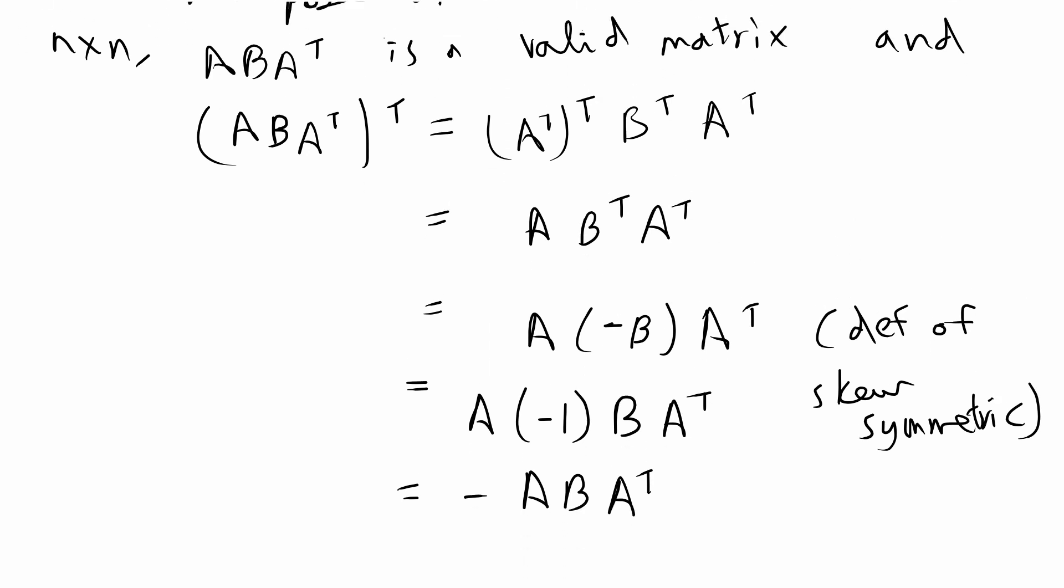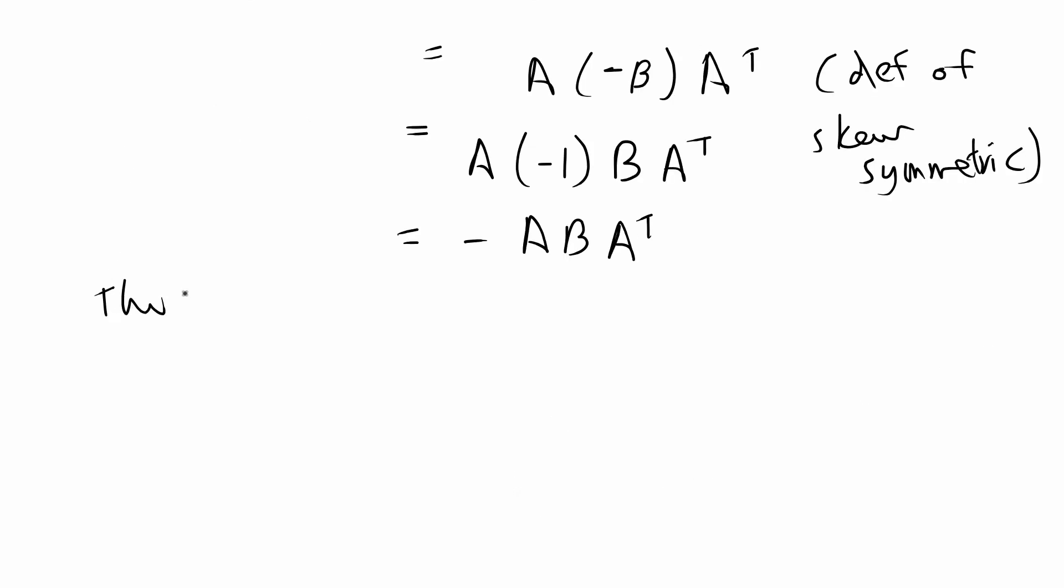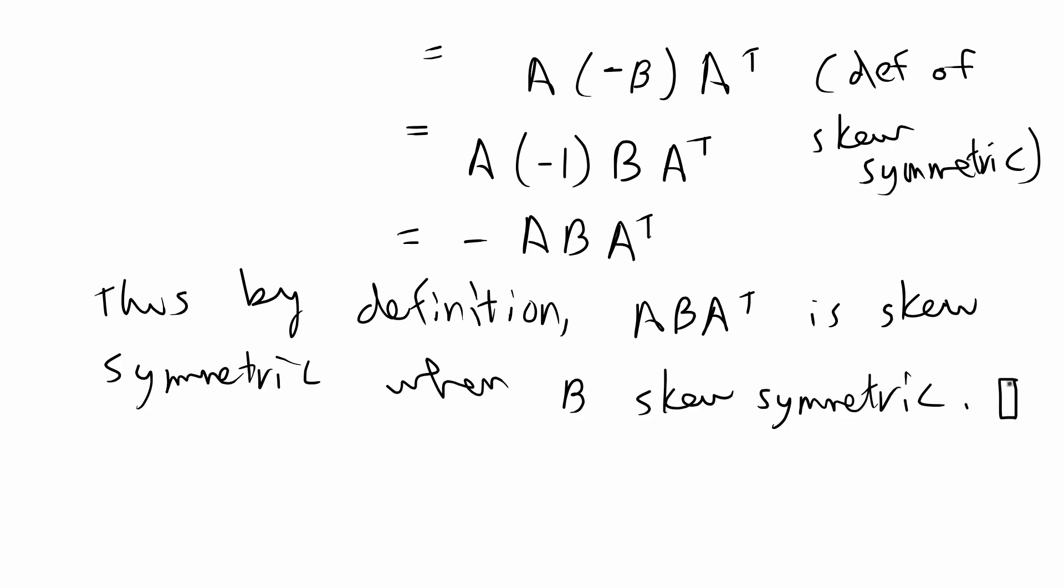So thus we have proven that (ABA^T)^T is equal to negative ABA transpose. So to finish the proof, we can say thus by definition ABA transpose is skew-symmetric when B is skew-symmetric. And we are done with this problem.